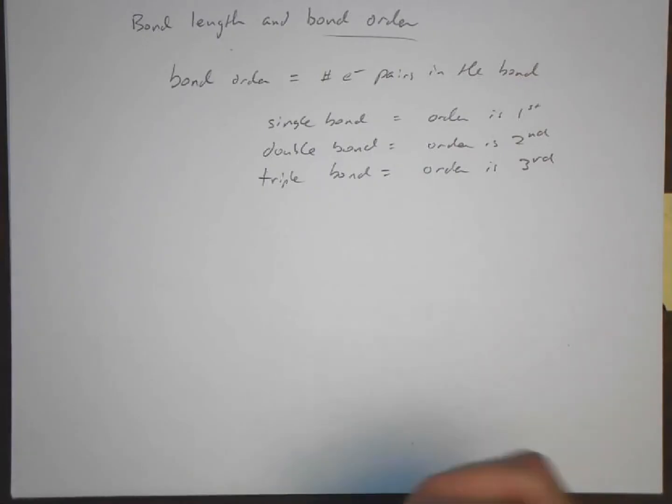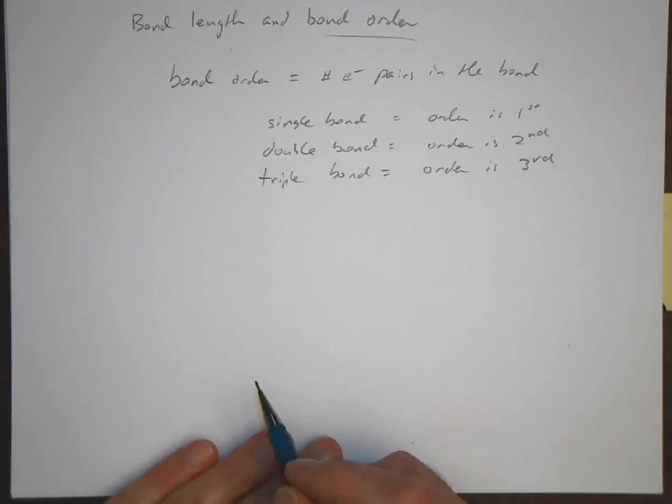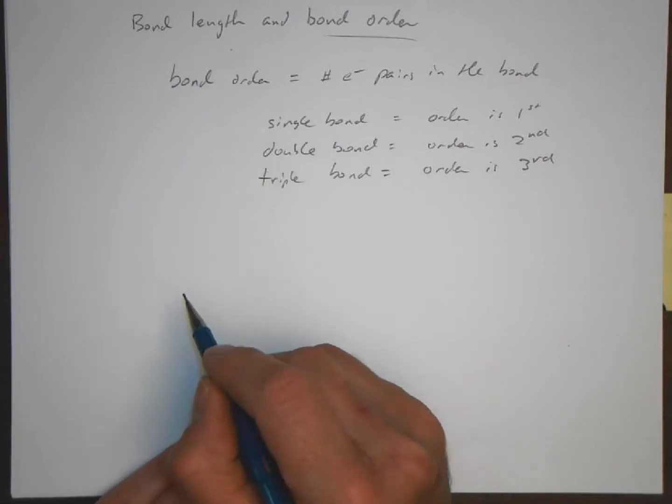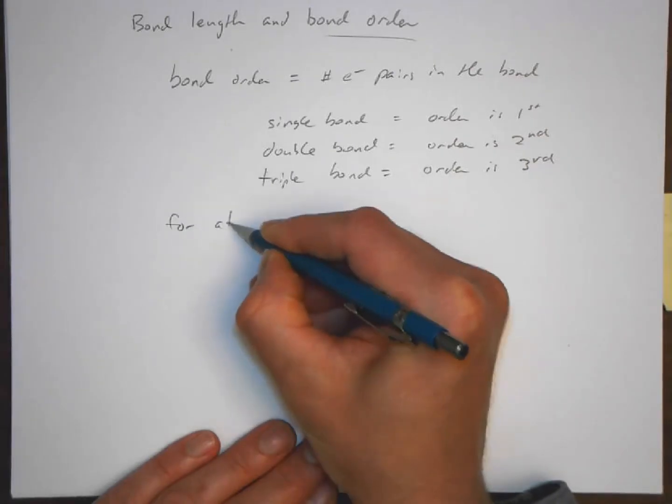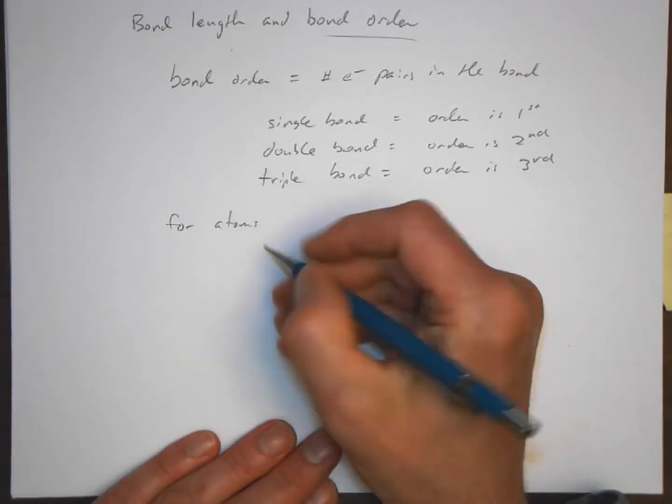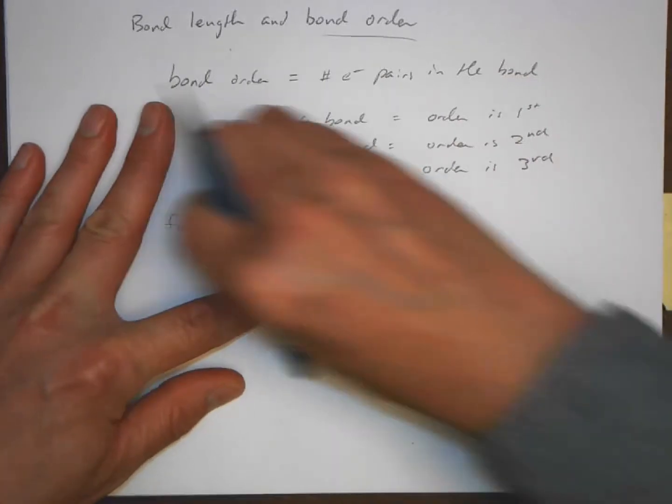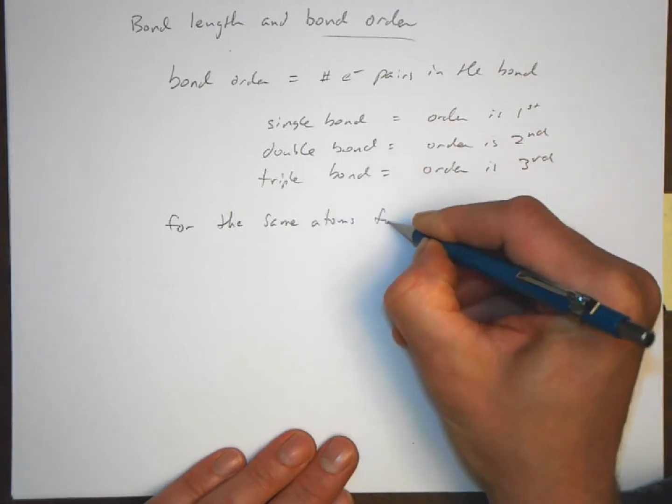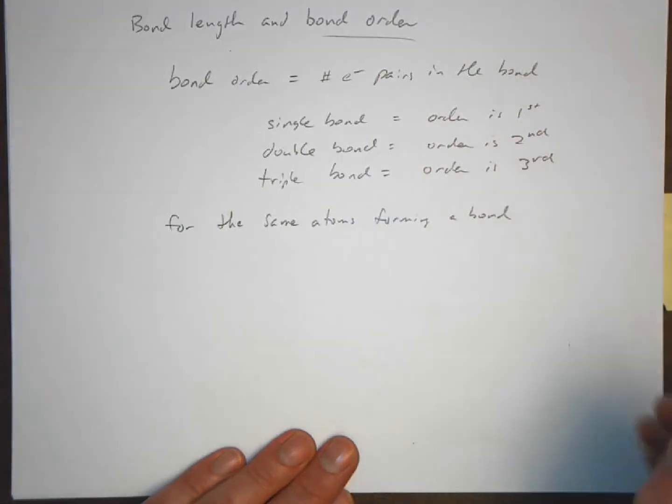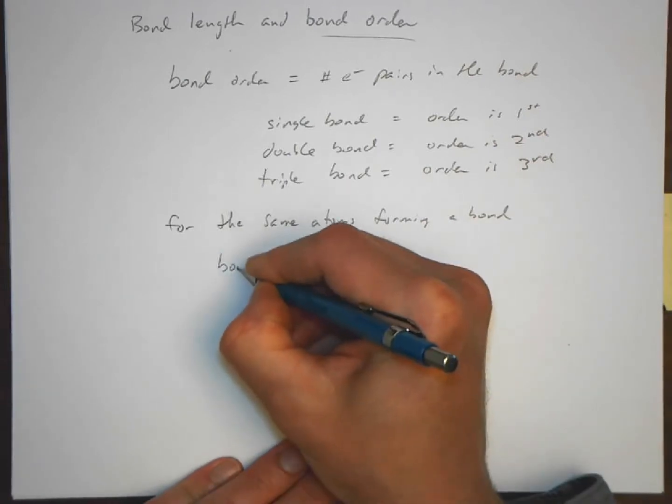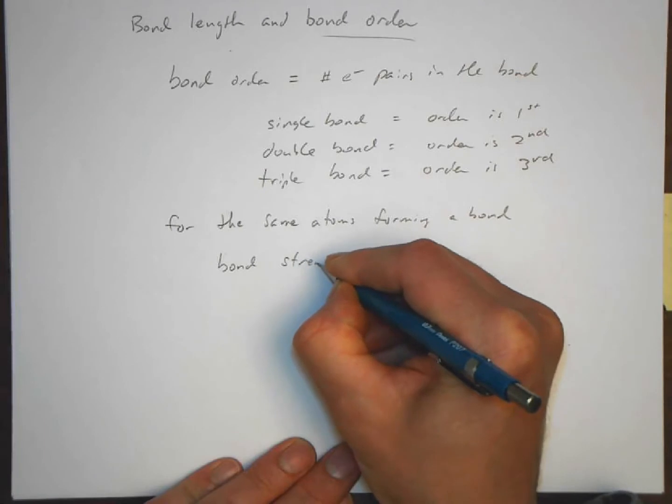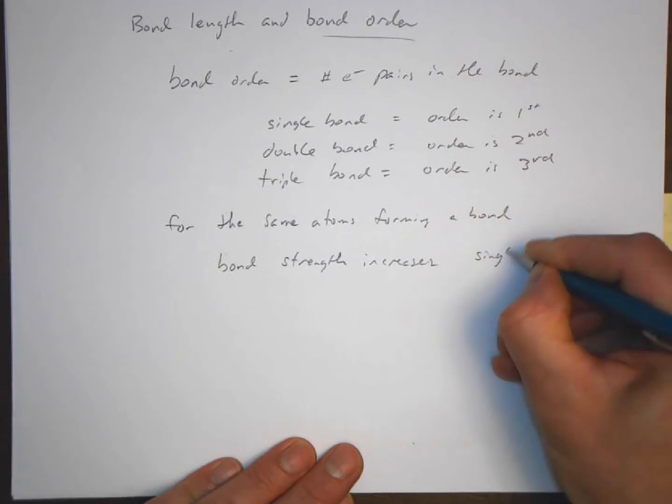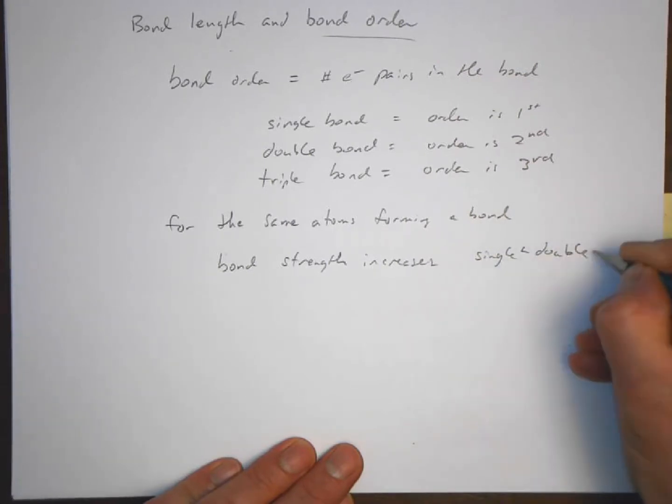That's straightforward, nothing complicated. All right, so let's look next at bond length. For atoms, for the same atoms that form a bond, bond strength increases as we go from single is less than double, less than triple.